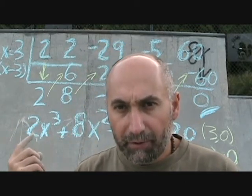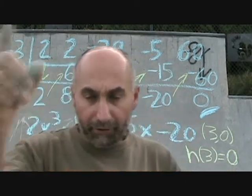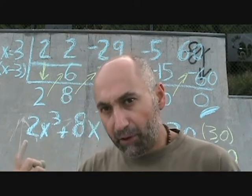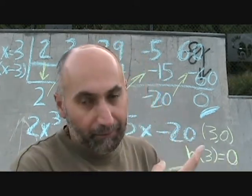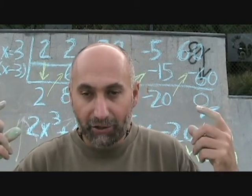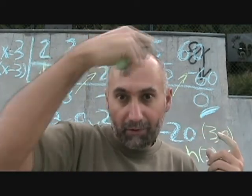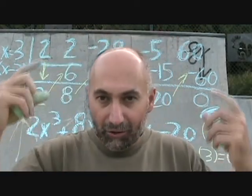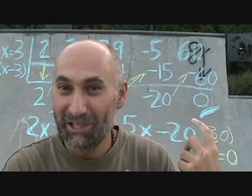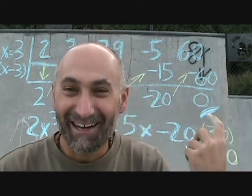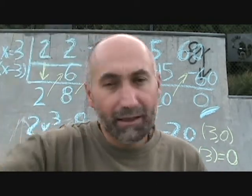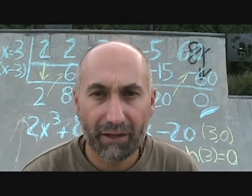What we're going to do is copy these coefficients down again and use the possible factors of negative 20 divided by the possible factors of 2. We won't need to go into fractions right now — we'll do one later where fractions are involved. Most likely it's going to be a possible factor of 20. So let's lay out the coefficients and continue synthetic division to see where we end up.